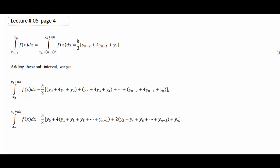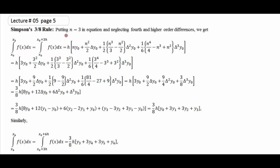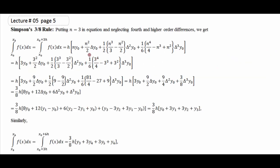اسی طرح Simpson 3/8 کے لئے general quadrature formula میں n کو 3 سے replace کریں۔ اس میں fourth اور higher order differences کو neglect کر دینا ہے — تو general quadrature formula کی پہلی چار terms survive کریں گی Simpson 3/8 کے لئے۔ وہ terms لکھ لیں، جہاں جہاں n آ رہا ہے اسے 3 سے replace کریں، اور ان کو simplify کریں۔